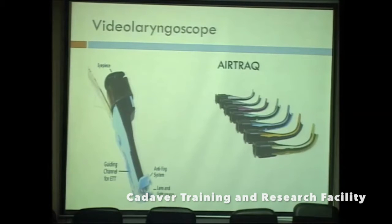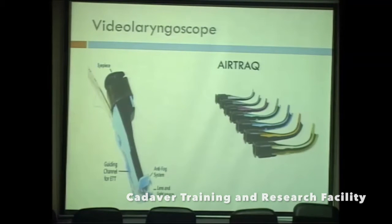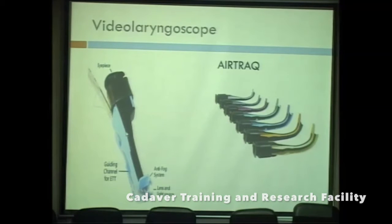The Air-Track is another video laryngoscope with an endotracheal tube slot. It is color-coded and available in different sizes: green for tubes 5–6.5 (small adult), blue for normal adults (7–8.5), orange or white for double-lumen tubes, grey for nasal endotracheal intubation, purple for infant oral, and pediatric oral. The Air-Track can be used across almost all patient sizes and categories, including for nasal intubation and double-lumen tubes.